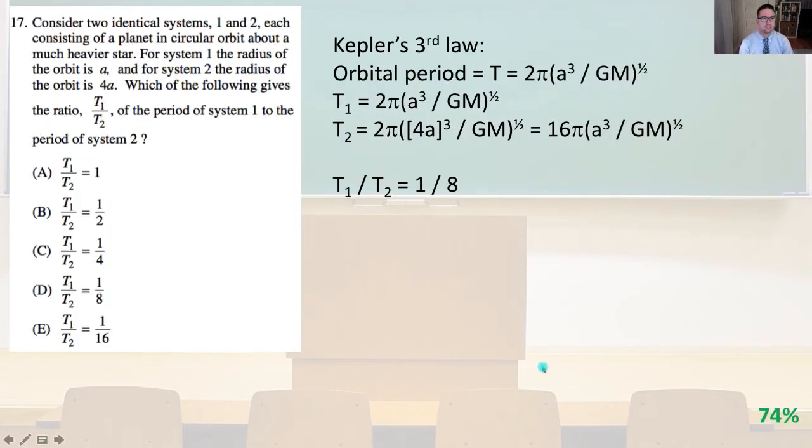Number 17. Consider two identical systems, 1 and 2, each consisting of a planet in circular orbit about a much heavier star. For system 1, the radius of the orbit is a, and for system 2, the radius of the orbit is 4a. Which of the following gives the ratio t1 over t2 of the period of system 1 to the period of system 2? So we know Kepler's third law, the orbital period t equals 2 pi times the square root of a cubed divided by gm.